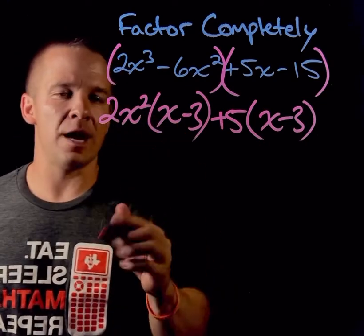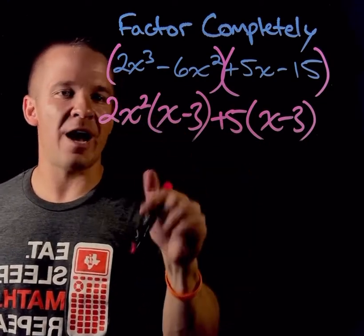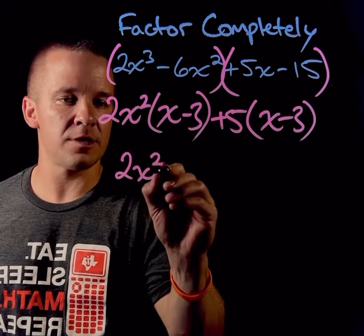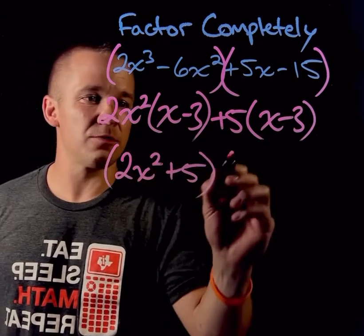All right. Next up, 2x squared plus 5. That is one of my factors. And then I have the x minus 3. That is my other one.